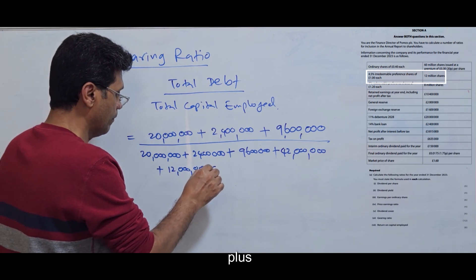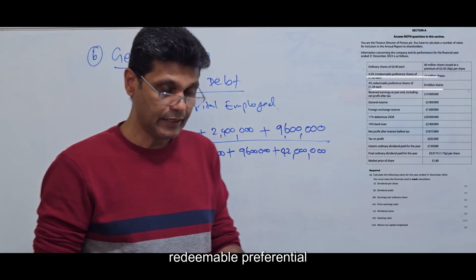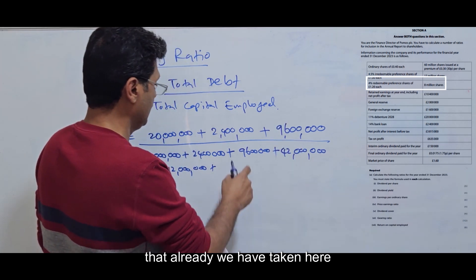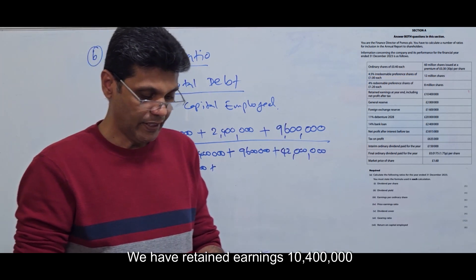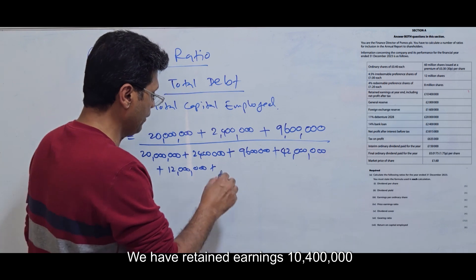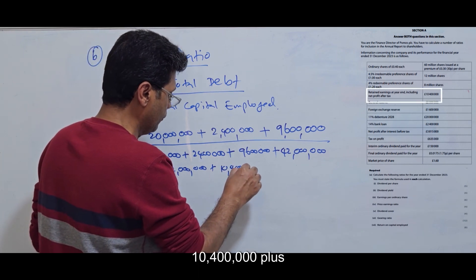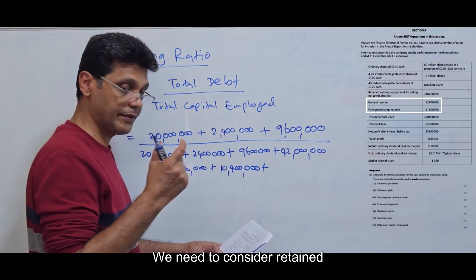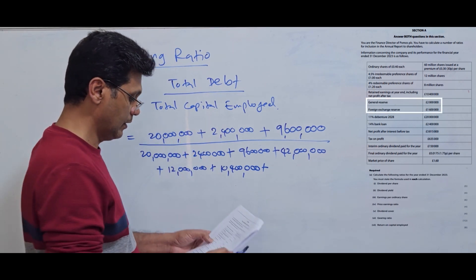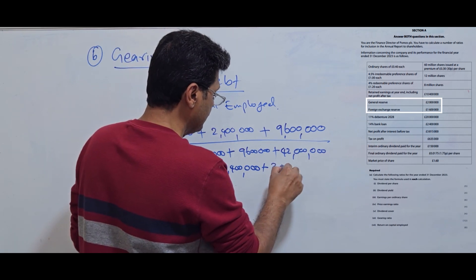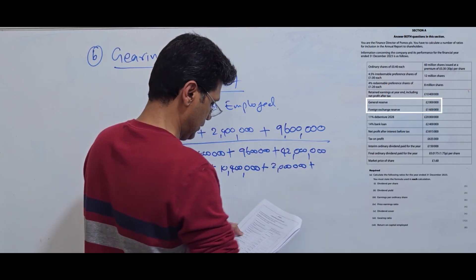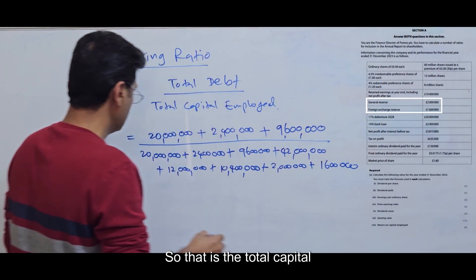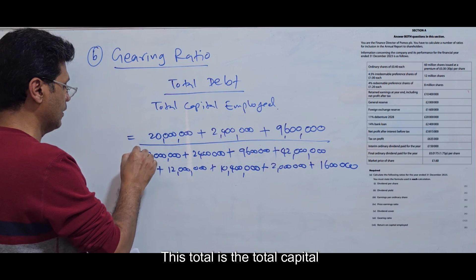Plus redeemable preference shares—we already took that here at 9.6 million. We have retained earnings 10 million 400, plus general reserves—we need to consider retained earnings and other reserves of 2 million, plus foreign exchange reserve 1.6 million. That is the total capital employed.